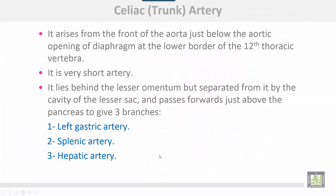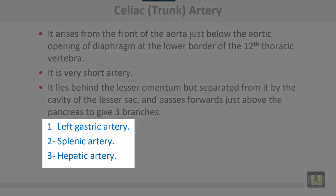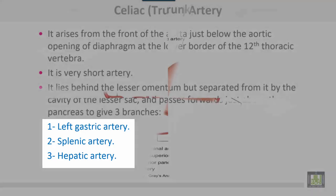The celiac trunk arises from the front of the aorta just below the aortic opening of the diaphragm, at the lower border of the twelfth thoracic vertebra. It is a very short artery that lies behind the lesser omentum but is separated from it by the cavity of the lesser sac. It passes forward just above the pancreas to give three branches: left gastric, splenic, and hepatic arteries.